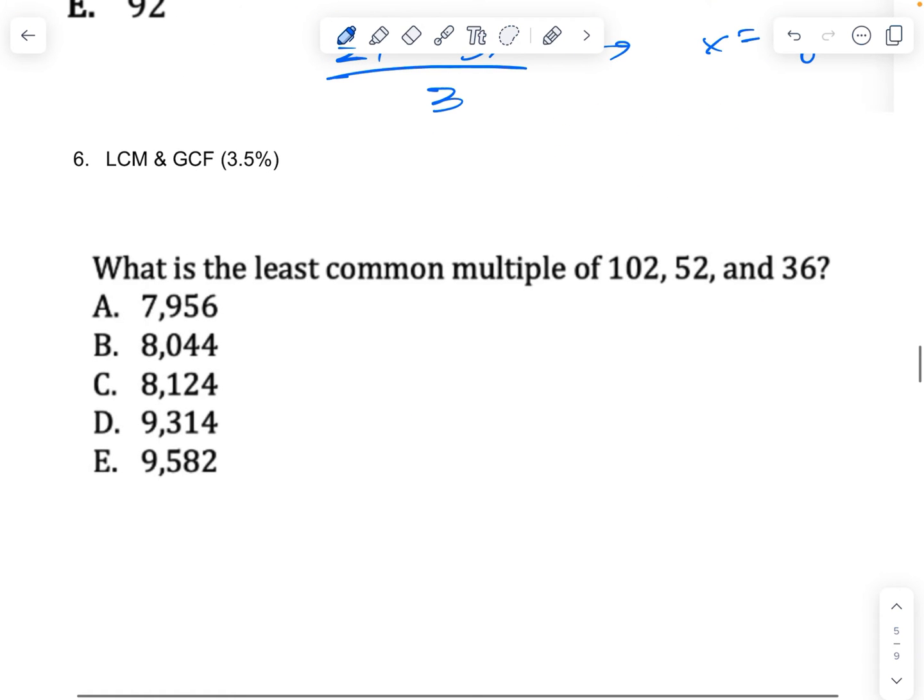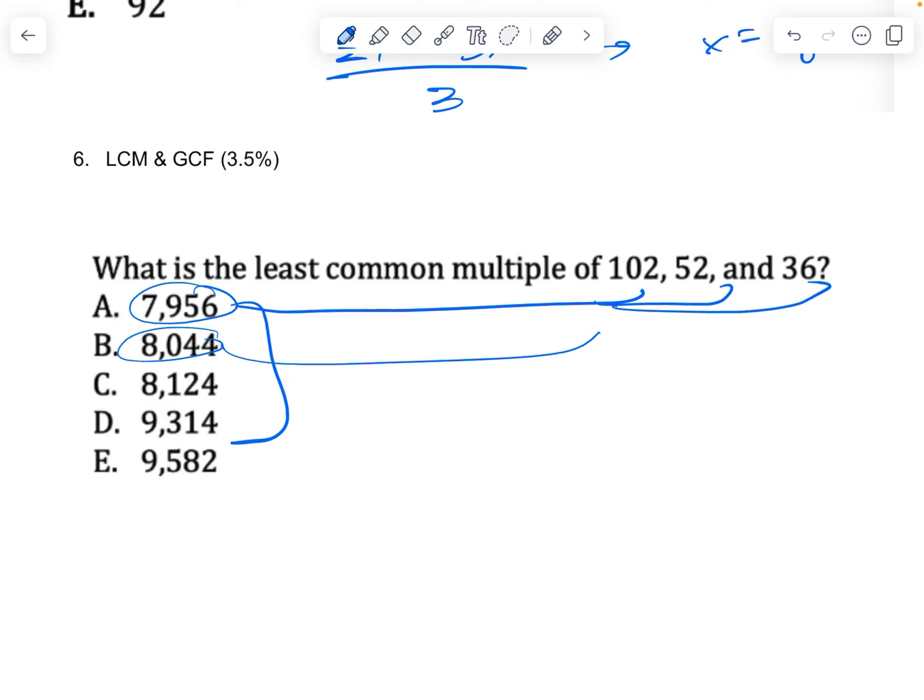Least common multiple. What we're going to do for our least common multiple problem like this, we're going to take all of the answer options and divide them by all three of these numbers and see which one is the smallest answer option that's divisible by all three. So you'll divide this by all three on your calculator, then divide this by all three on your calculator, and whichever smallest answer option here meets the criteria of being divisible by all three, that's your least common multiple.